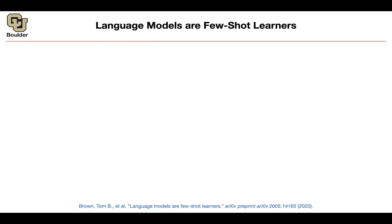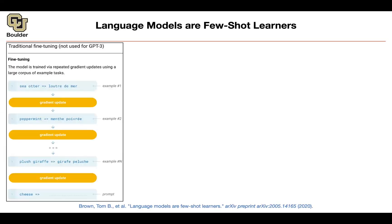You have a solid background now and can start reading papers on your own. We have this traditional fine-tuning, which is BERT-type models. You do pre-training then fine-tuning on the target task. For fine-tuning, let's say you want to translate - that's your downstream task - and you already pre-trained your language model. Now you want to fine-tune it.